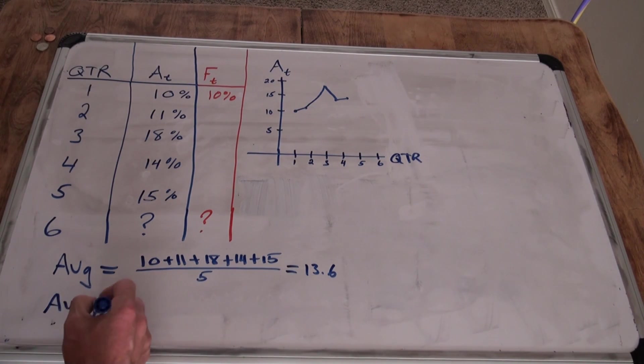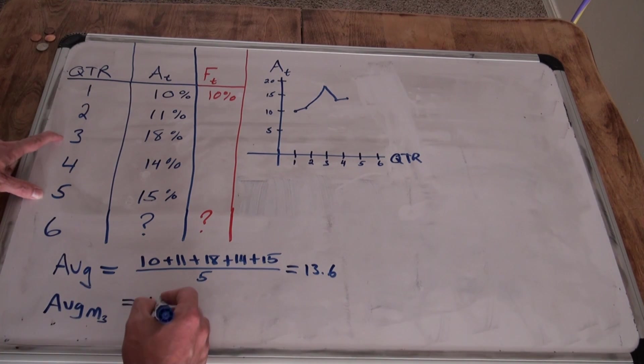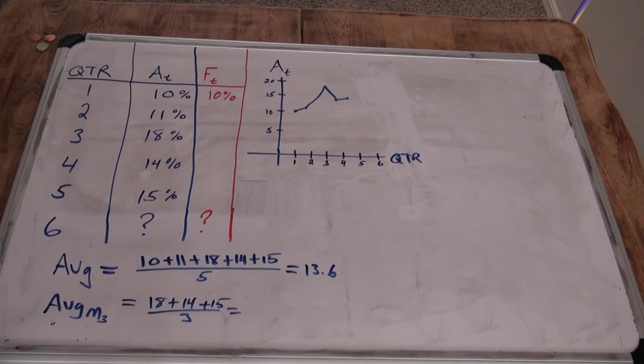So let's take a three-quarter moving average to find the sixth. So the average moving, we'll put a little three there, moving three quarters, is equal to the previous three, which is going to be 18 plus 14 plus 15 divided by 3, which equals 47 divided by 3, which is 15.66, so about 15.7.